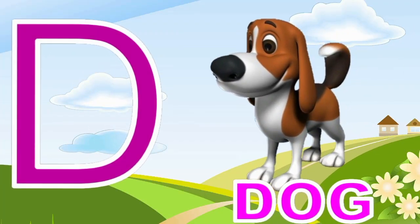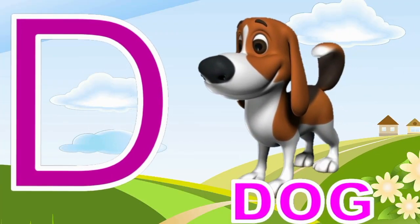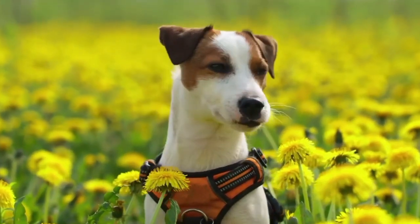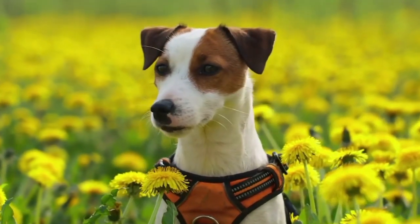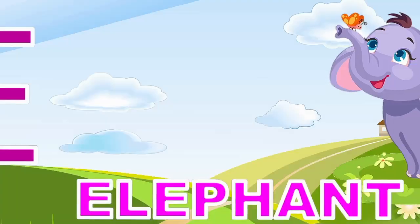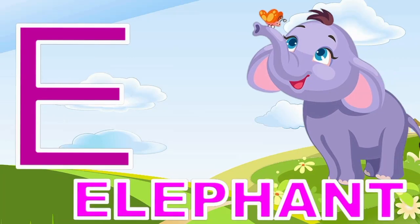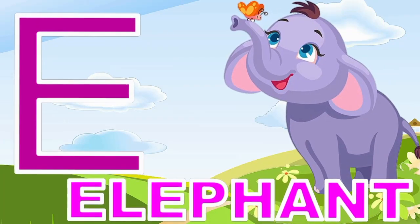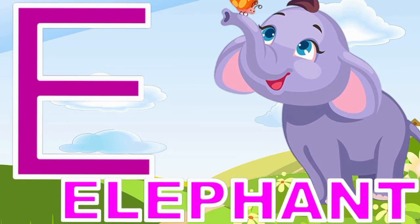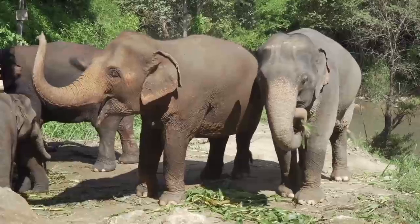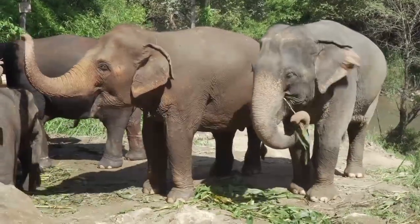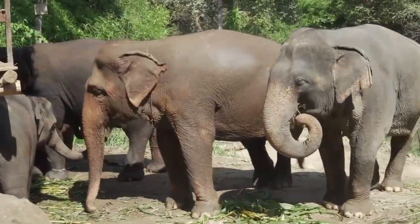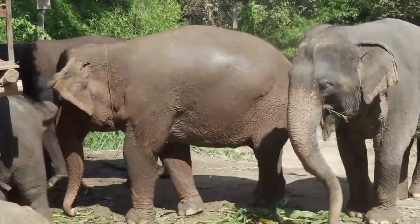The poor dog. Dog means gutta. E for Elephant. Elephant means healthy.